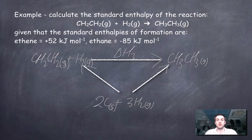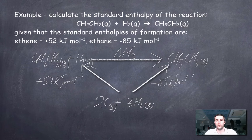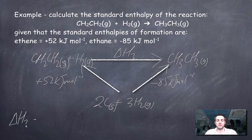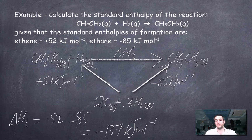The sum of the standard enthalpies of formation of the reactants: there's one mole of ethene, so it's +52 kJ/mol. There's also one mole of hydrogen, but an element has a standard enthalpy of formation of zero. Here's the ethane, and its standard enthalpy of formation is −85 kJ/mol. So the enthalpy change delta H is clearly −52 plus −85, which equals −137 kJ/mol. I could have just used the formula, but I'm constructing cycles in this film because it's important to know how to do it.